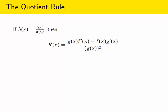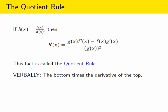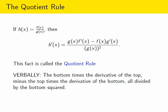You might be better off trying to think of it verbally. For the quotient rule, you can think of it this way: the bottom times the derivative of the top, that's g of x times f prime, minus the top times the derivative of the bottom, that's f of x times g prime of x, all divided by the bottom squared.